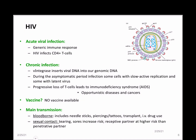Like basically all viruses, when infected with HIV, your body responds with a generic immune response: fever, muscle pains, and fatigue. Most people can look back and identify that acute viral infection. Like most viruses, HIV has specific cell targets — it specifically infects T cells expressing the CD4 marker. The viral DNA then gets integrated into our genomic DNA through an enzyme called viral integrase.